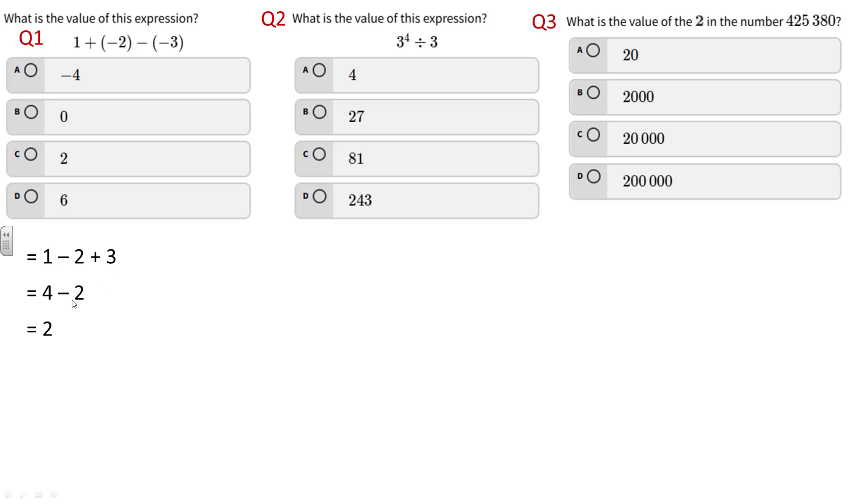You could also go straight from left to right: 1 subtract 2 is negative 1, then add 3 to it. Three plus negative one is two, or think of it as three take away one is two. So 2 is the correct answer.